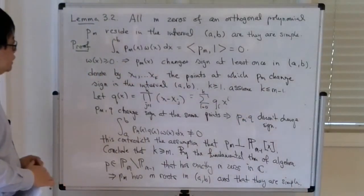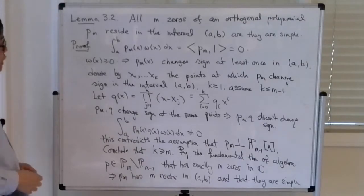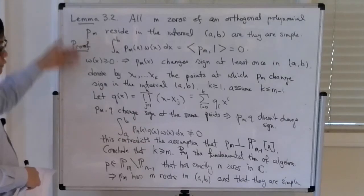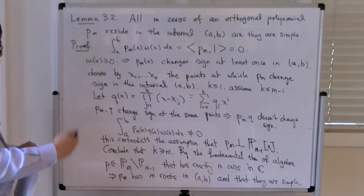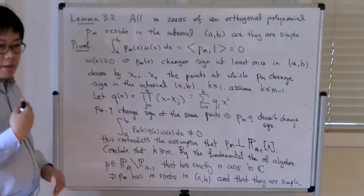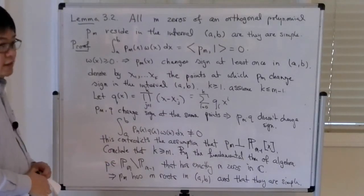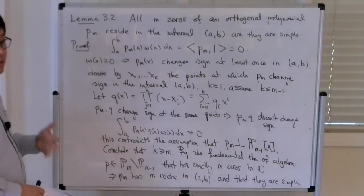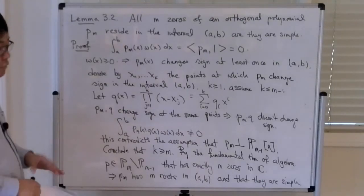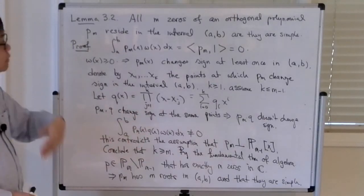This result is useful because in Gaussian quadrature you want to pick the quadrature points as the roots of some orthogonal polynomial. This lemma tells you that those roots lie within the integration interval and are distinct, which is exactly what you need when constructing Newton-Cotes formulas where the quadrature points must be distinct and lie within the integration interval.